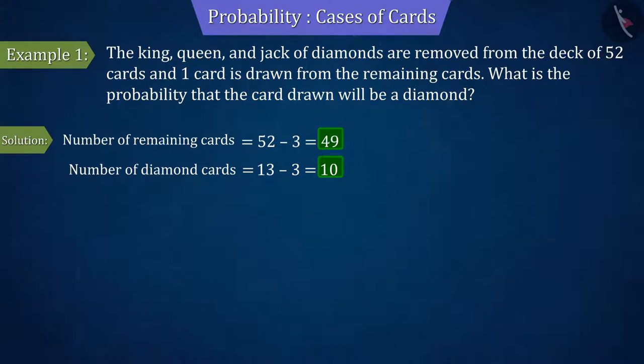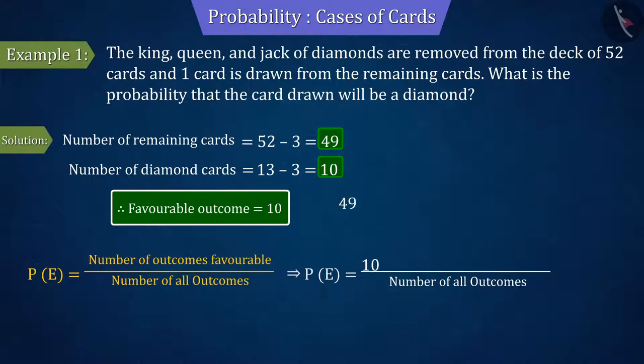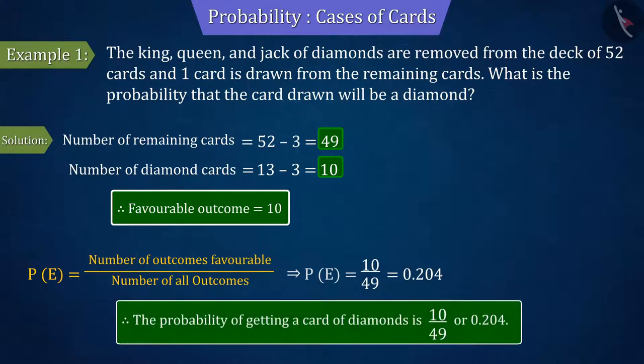In other words, the number of favourable outcomes of the event will be 10. By substituting the values of favourable outcomes and all possible outcomes in the probability formula, we get the result as 10 by 49 or 0.204. So, we can say that the probability of getting a diamond card is 0.204.